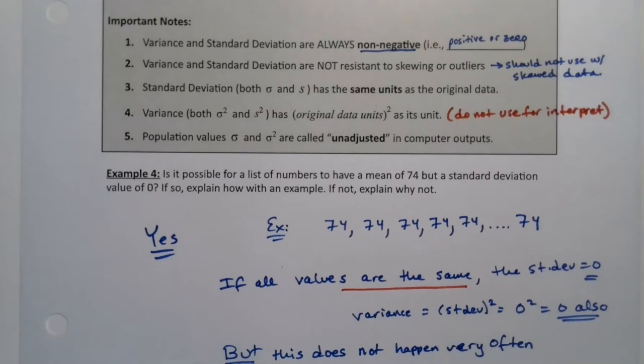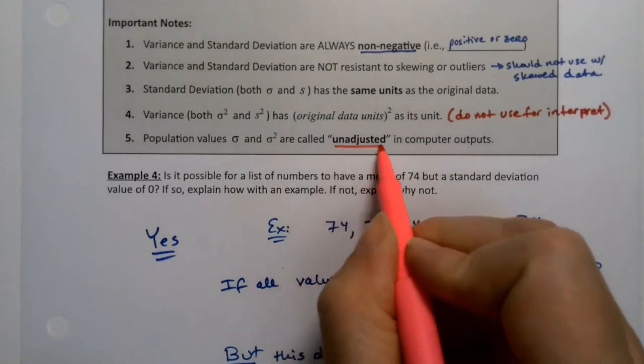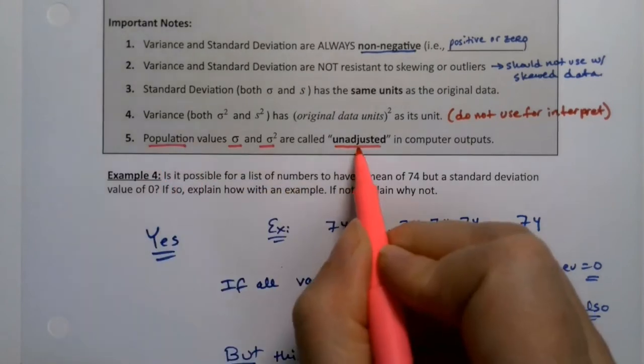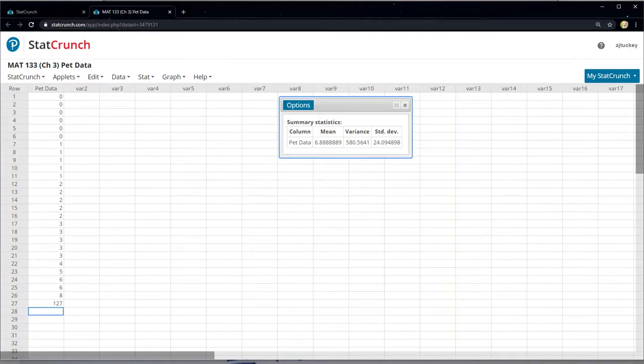And then just remember that StatCrunch in particular calls, and other computer programs do too, but StatCrunch calls the sigma and sigma squared values, which are the population values, unadjusted, right? So when I'm in StatCrunch, right here, I found regular variance and standard deviation.